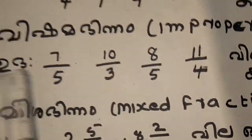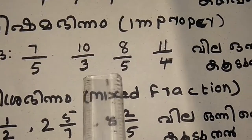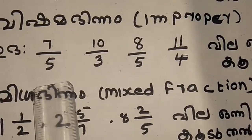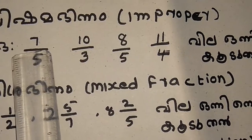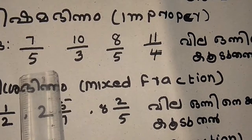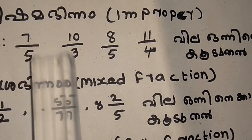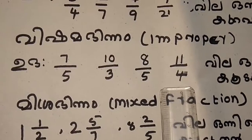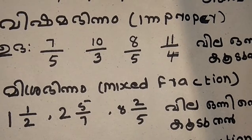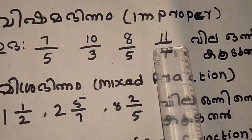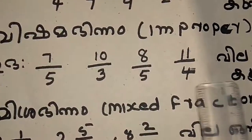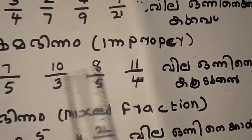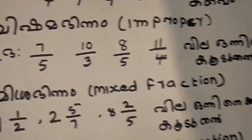7 by 5, 10 by 3, 8 by 5, 11 by 4. Numerator is greater than denominator. Improper fraction adava vishama binra.